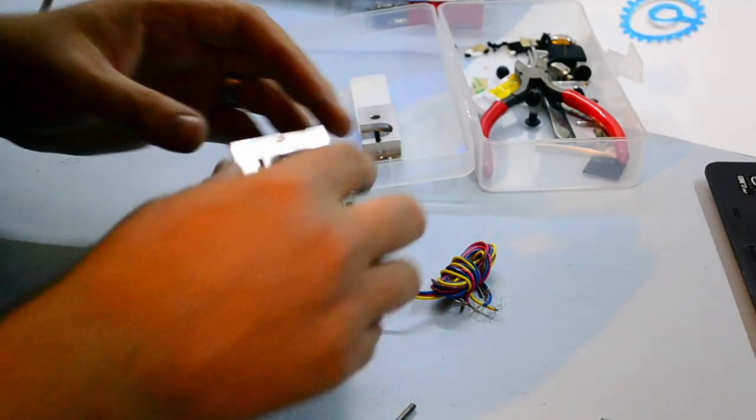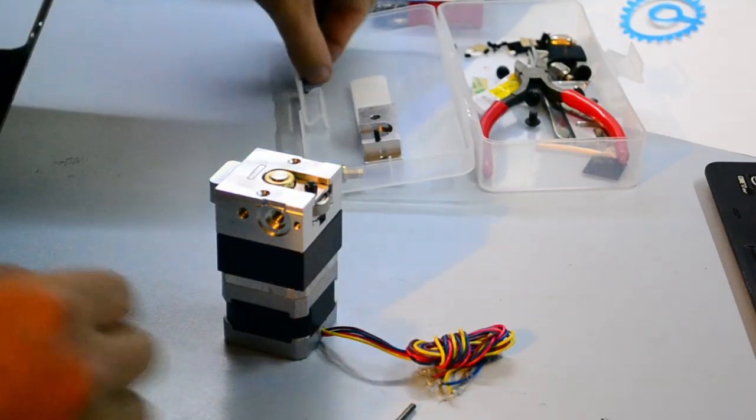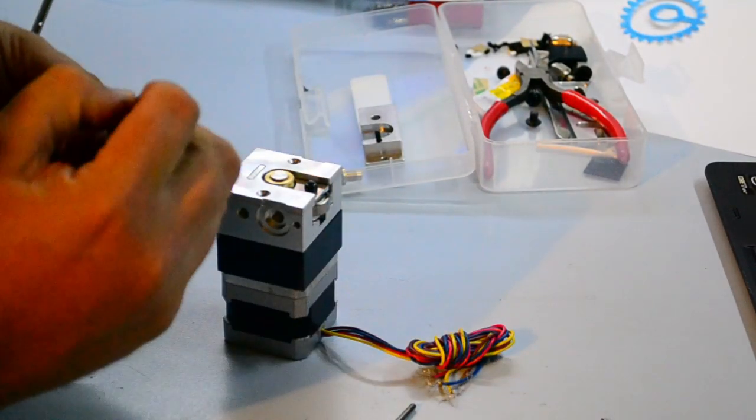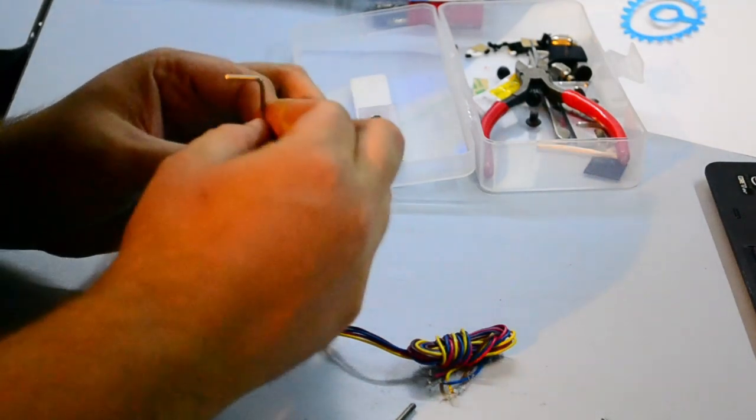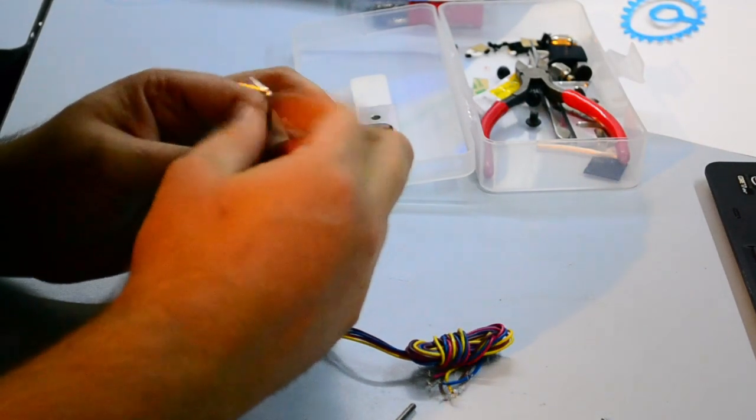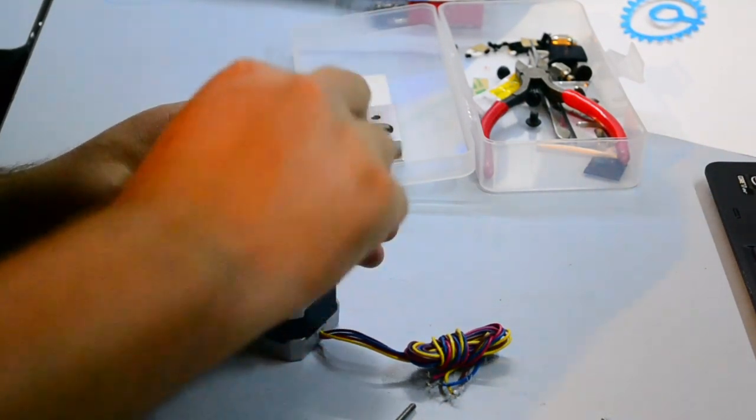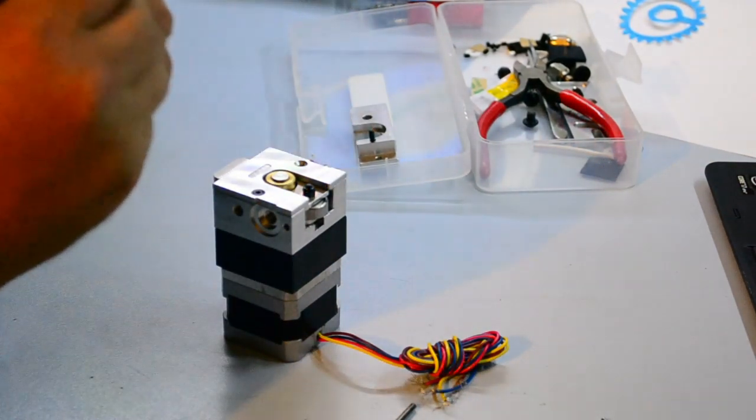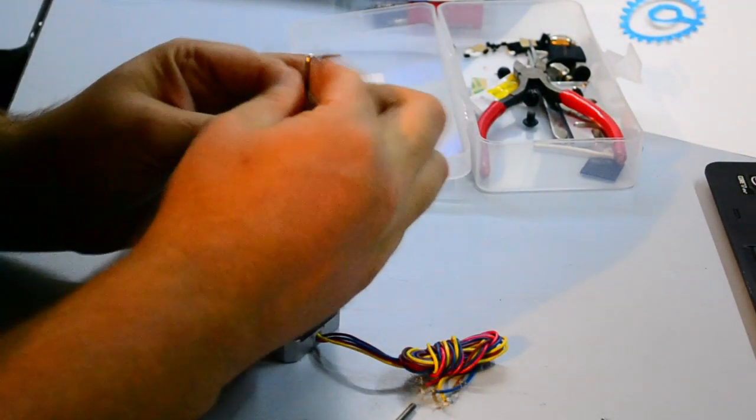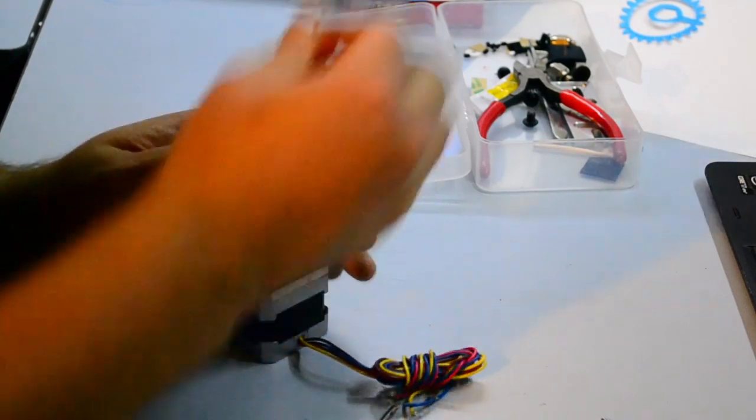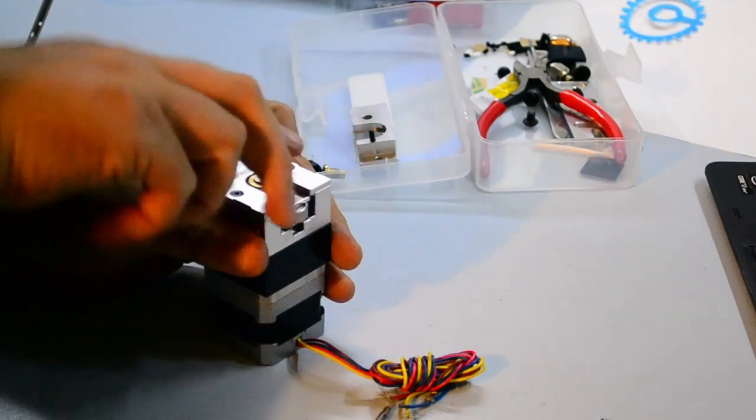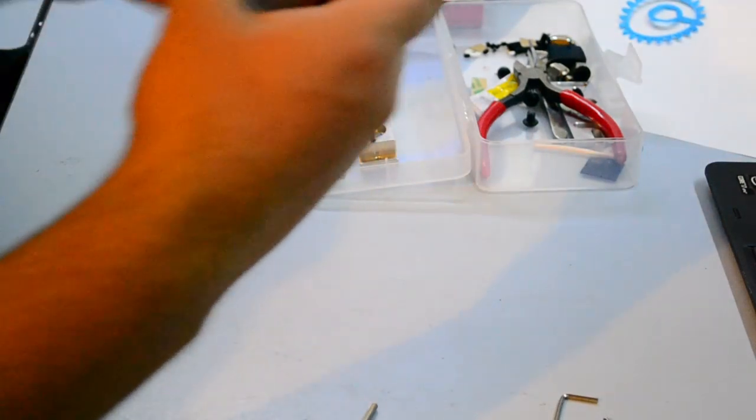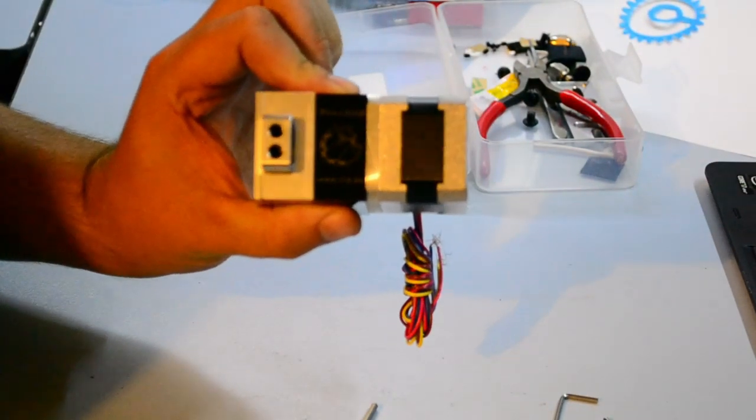Put your end cap back on. Line up the hole with the tab in the main extruder body. Put in two Allen keys. Tighten that up.